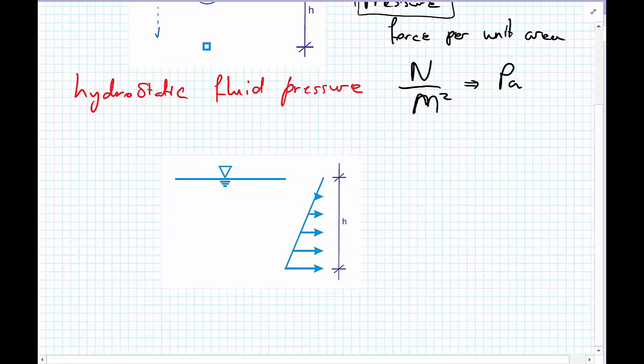We're going to consider this little element of pressure. It turns out the pressure varies from zero at the surface, and it varies linearly as we go down with depth H into the body of the fluid.